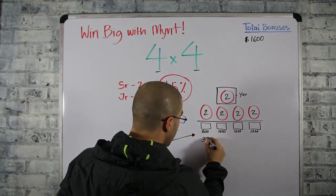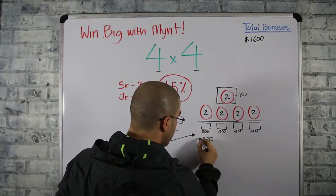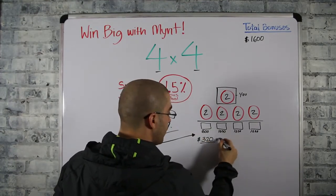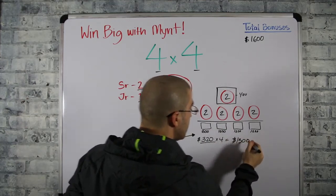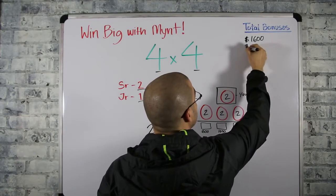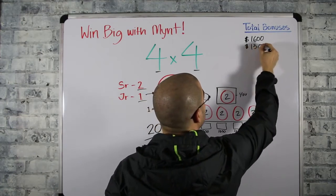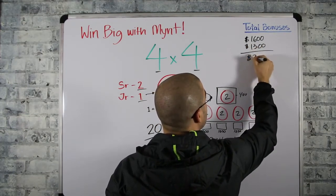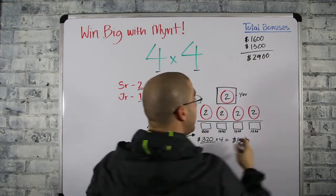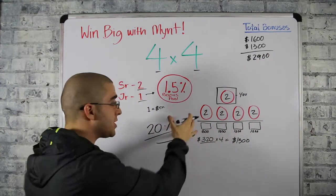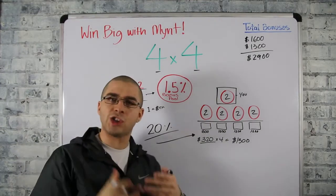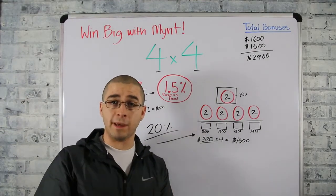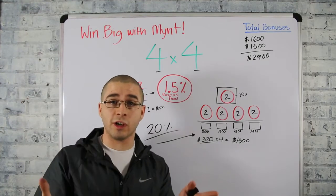So twenty percent of sixteen hundred is three hundred twenty dollars, multiply that by four because you have four people, you're looking at around thirteen hundred dollars. So now your total bonuses are around twenty nine hundred dollars already cash in your account just for helping four people make sixteen hundred dollars. So in this business you actually get rewarded for helping people make money unlike most other businesses.